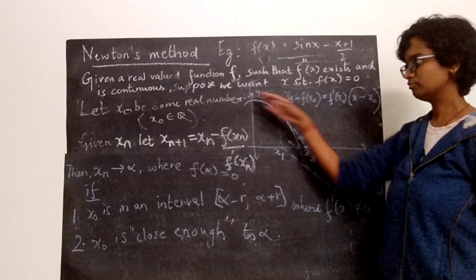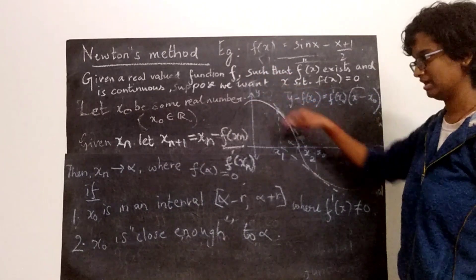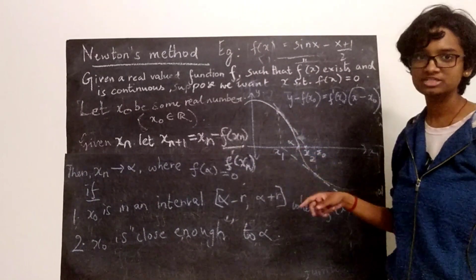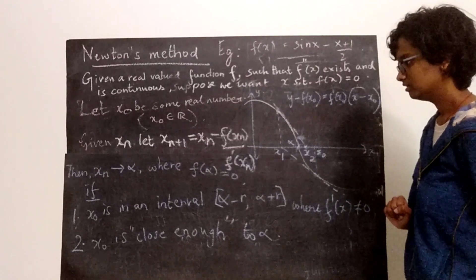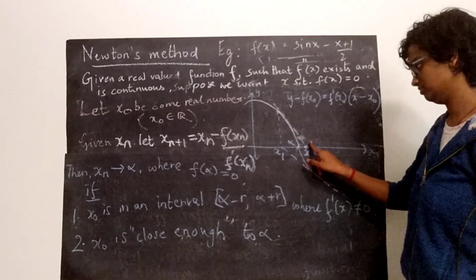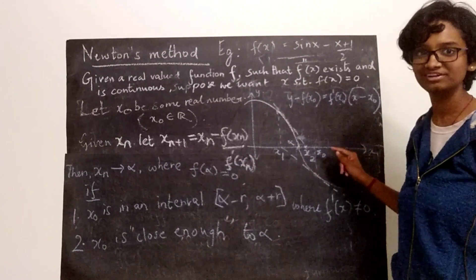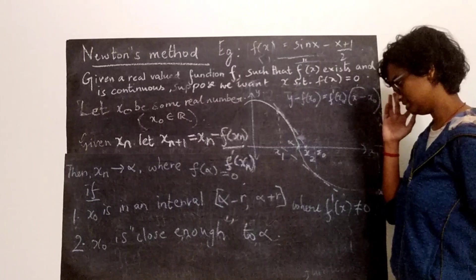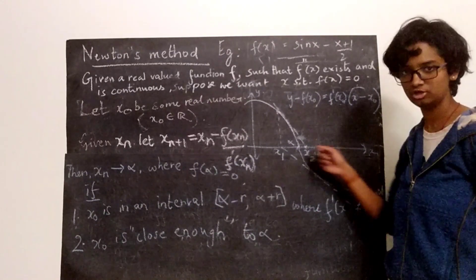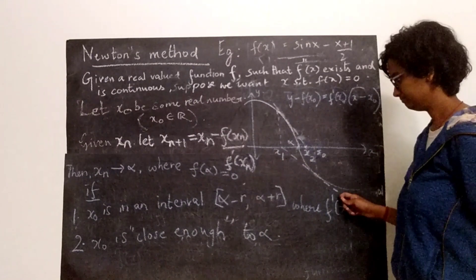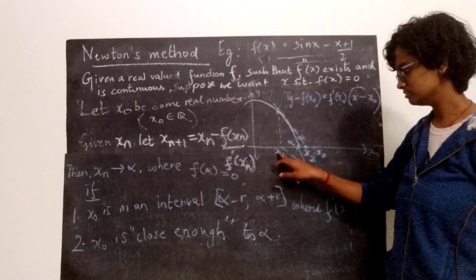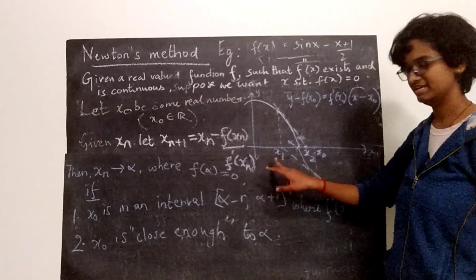So how does the algorithm go? I have a graph for f — inputs on the x-axis, outputs on the y-axis. Let's say the root is called alpha. I start with some real number x0. What I do is draw the tangent to the graph at x0, looking at the point (x0, f(x0)) on the graph. If the tangent is not horizontal, it will cut the x-axis somewhere — name that point x1.